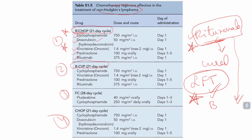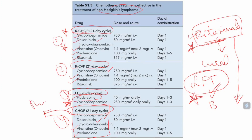Additional regimens include FC (28-day cycle) — Fludarabine and Cyclophosphamide. CHOP regimen (21-day cycle) consists of Cyclophosphamide, Doxorubicin, Vincristine, and Prednisolone. If CHOP is not effective, Rituximab is added. If patient has hepatitis, Rituximab is not added and we go directly with CHOP therapy. These strategies are commonly used for different types of NHL, and adverse effects such as bone marrow suppression must be monitored.